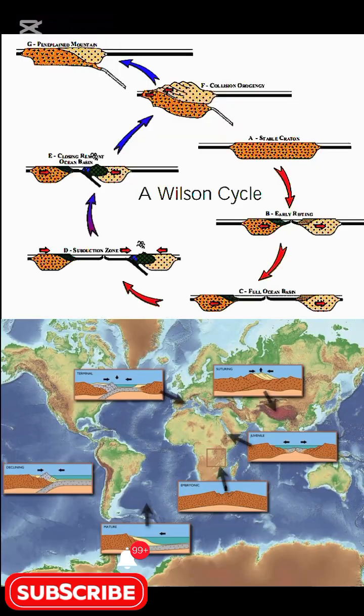See how Earth recycles itself? From calm cratons to fiery collisions and back, it's all connected. Like the supercontinent Pangaea, they divide and the cycling repeats over millions of years. This is called the Wilson Cycle.